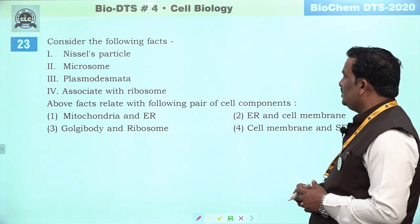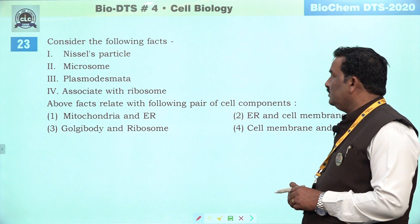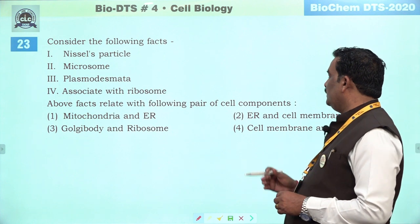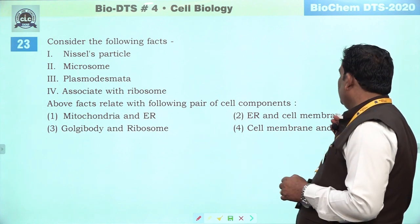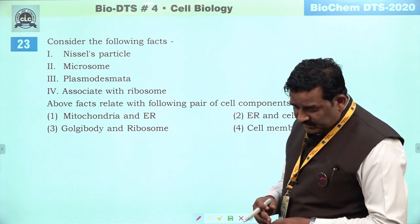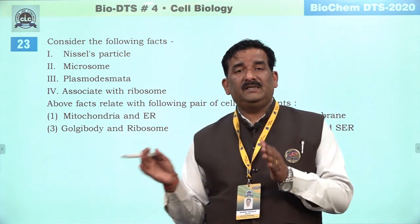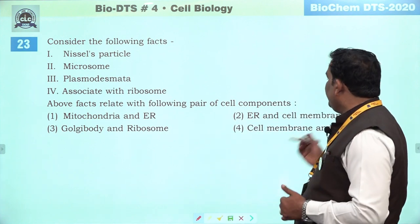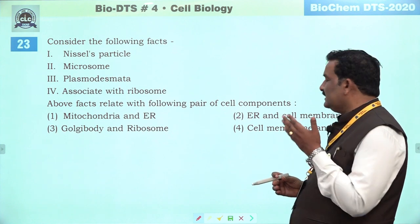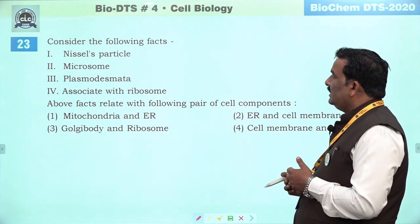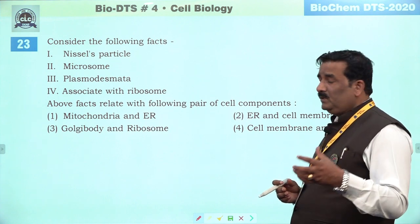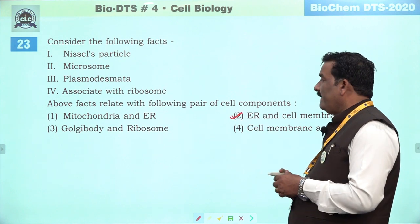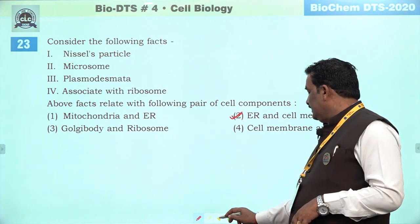Next question: consider the following facts — Nissl particle, microsome, plasmodesma — associate with the ribosome. Ribosome se jo cheez associate hai woh ER bhi hai. Aur prokaryotic cell mein ribosome cell membrane se attached hote hain. Nissl particle ka connection ER se hai. Plasmodesma ka connection desmosome se hai jo SCR ka part hai. Isliye humare liye second better option hai.